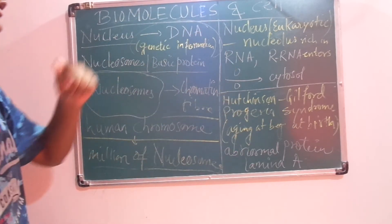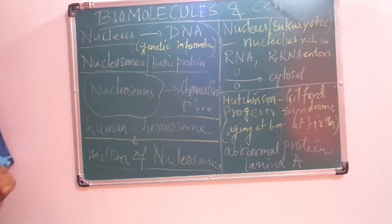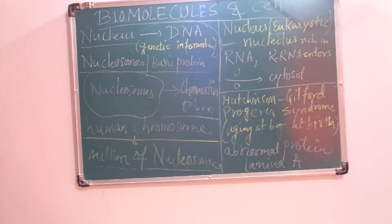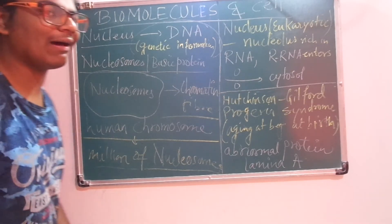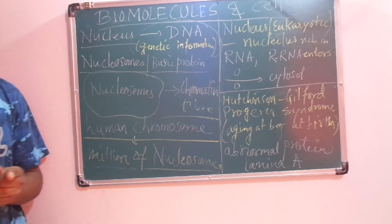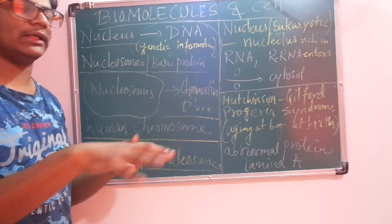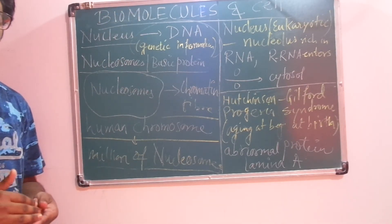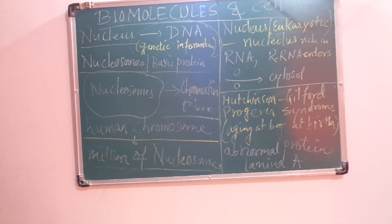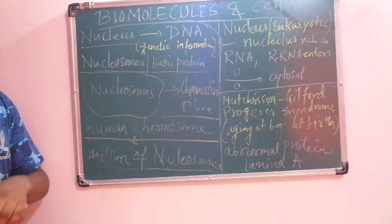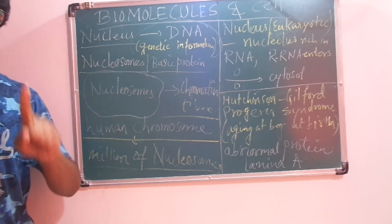There is also the term nucleoplasm. The ground material of the nucleus is referred to as nucleoplasm. In a cell, the nucleus contains DNA material, which carries genetic information from generation to generation — that is heredity. The nucleus also contains nucleosomes and chromosomes, and the ground material of all this is the nucleoplasm.